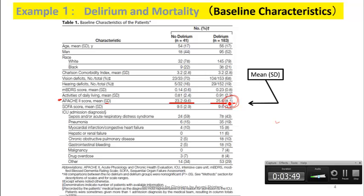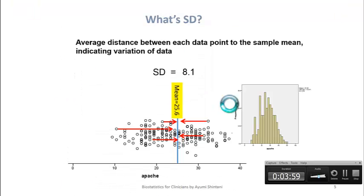If this number is not useful, we shouldn't even put it in a paper. So let's think about how we can utilize this 8.1 when reading a paper. Standard deviation is, in fact, the average distance between each data point and the sample mean.